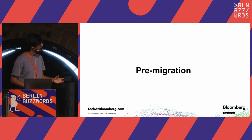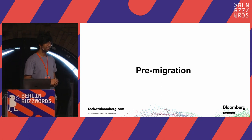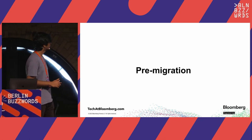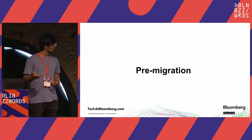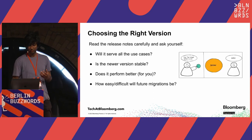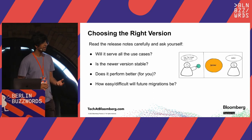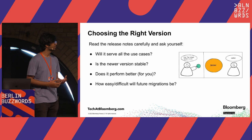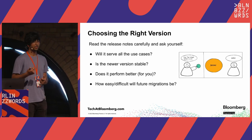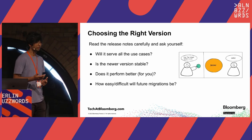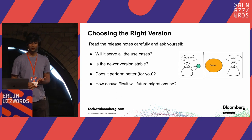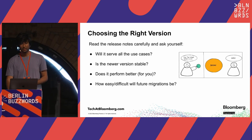This talk is divided into three phases: what we did pre-migration, what we did during the migration, and what we did after the migration. Pre-migration is mostly about planning and choosing the right version. Before actually upgrading, you need to know what version you should move to, and you should ask yourself some questions.